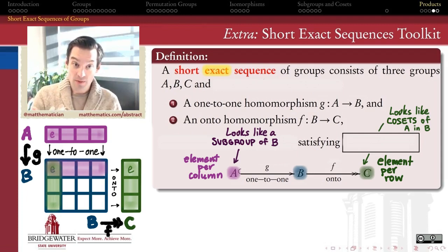So the ideal picture that we have in mind for what a short exact sequence is doing is it's relating a subgroup of B, think of that as the A, and the cosets of that subgroup inside of B, so think of that as C.